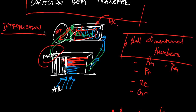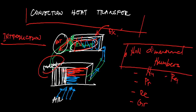For the introduction: convection heat transfer is a phenomenon where heat is transferred — usually, although not necessarily — from a solid surface to its adjacent fluid which is in motion. In our radiator example, we have cooling fins as the solid surface and moving air as the fluid in motion.